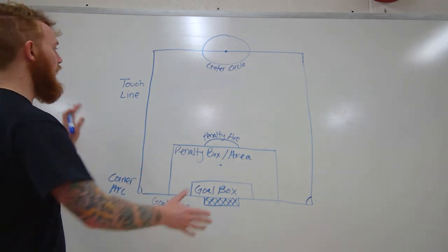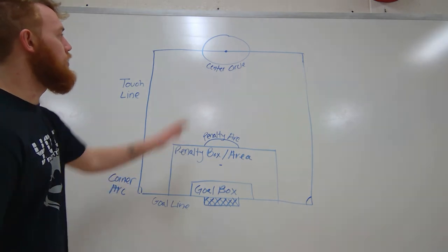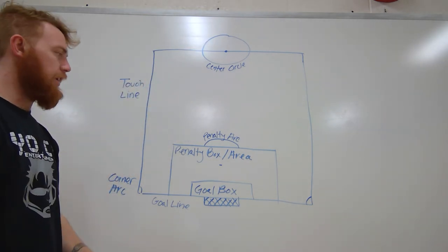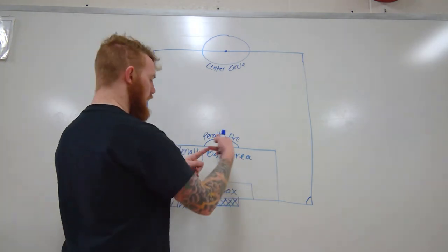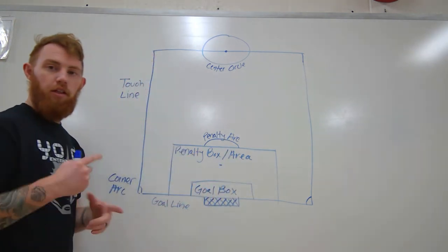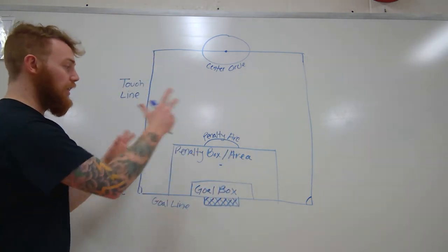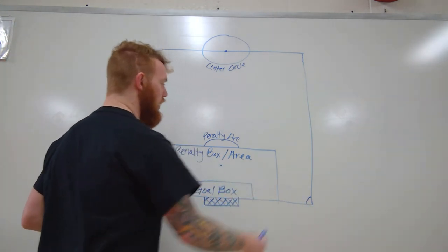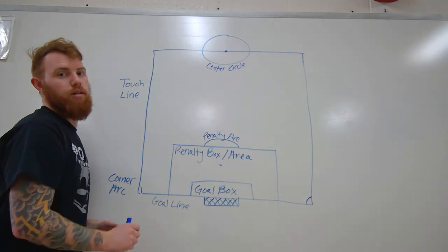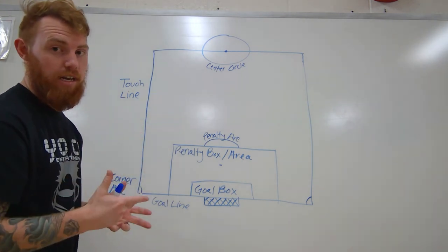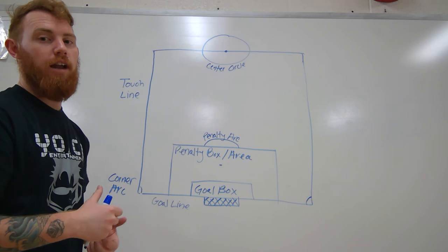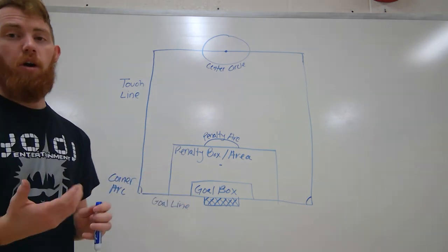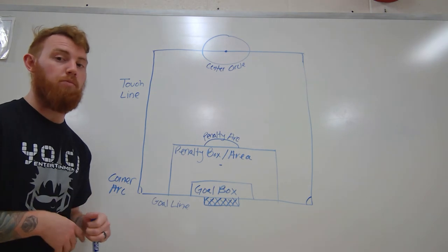So this is how a soccer field looks. At all times you have your center circle, your two touchlines, and your goal line. Then you'll have a penalty box and a goal box — those are your guaranteed elements. Most likely you'll also have two corner arcs and a penalty arc, though a referee can enforce the rules without those two pieces. But it's always good to have them because it makes your game feel more official.